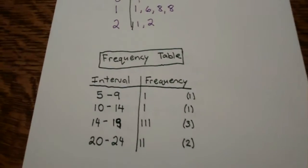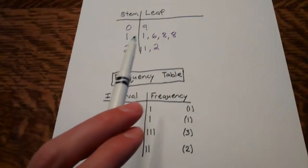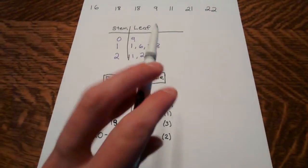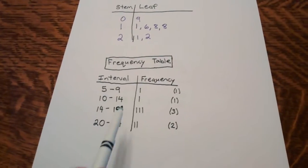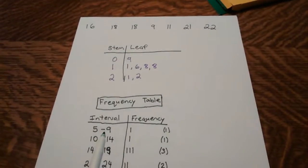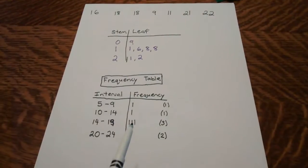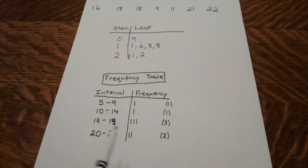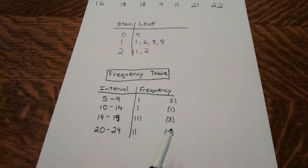So let's move on to another example. This is the stem and leaf plot that we did yesterday. And all I've done is taken that and turned it into a frequency table. So here's kind of the same idea. I looked up at the data, 5 to 9, there was the 9 up there, so there's 1. 10 to 14, there was 1, so I put that there. 14 to 19, there was 3, so I put the 3 there.